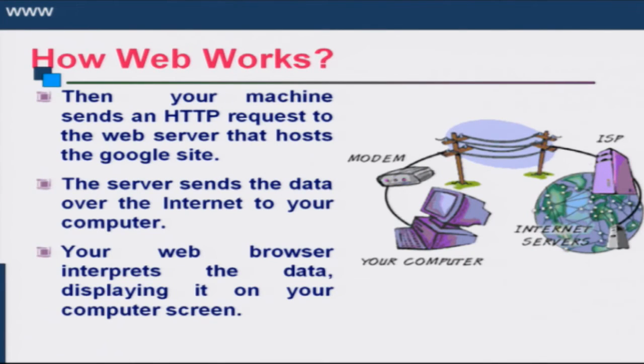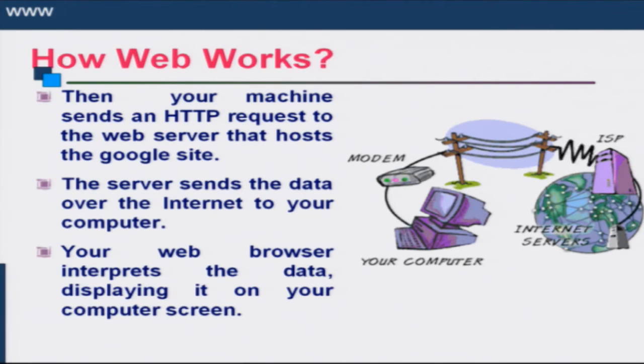On the client side, you write the address of the website you want to access — for example, www.google.com, which is the name of the Google web server. On the internet, all servers have a name and an address called an IP address. An IP address is a numeric address used to uniquely identify a machine on the internet. For human interface we use a name like www.google.com, but when machines communicate they use IP addresses to identify each other.